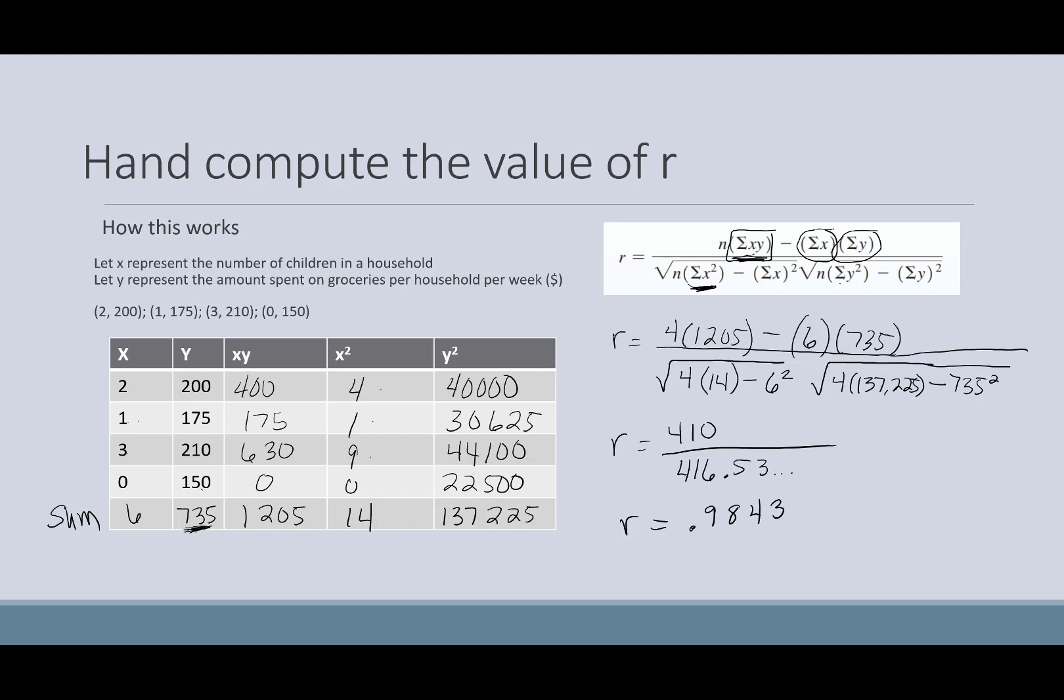Now we're going to typically round to three decimal points for the r value. That is going to depend on your standardized table that you're using, but the ones that I use usually go out to three decimals. So I'm going to round that to 0.984. And so here we have our value for our correlation computed by hand.